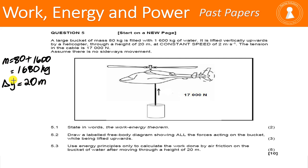At constant speed of 2 meters per second. I must specify constant. The tension in the cable is 17,000 newtons. So tension is 17,000 newtons. Assume there is no sideways movement.